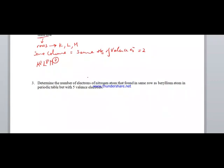Part 3: Determine the number of electrons in the nitrogen atom found in the same row as Beryllium. Nitrogen has 5 valence electrons and is in the same row as Beryllium, which means it is in row 2, with 2 energy levels: K and L.